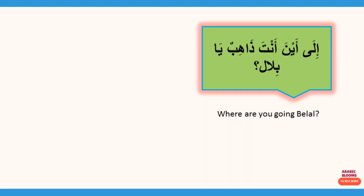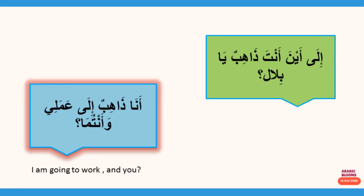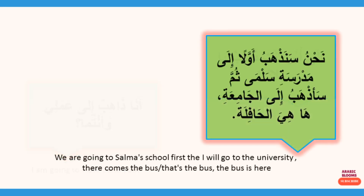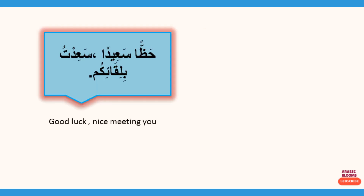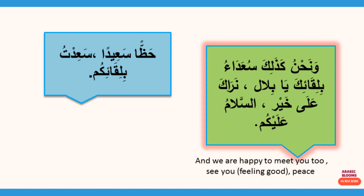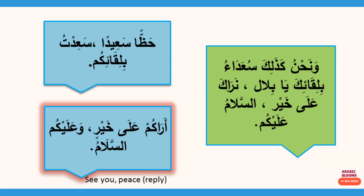إلى أين أنت ذاهب يا بلال؟ أنا ذاهب إلى عملي. وأنتما؟ نحن سنذهب أولا إلى مدرسة سلماء. ثم سأذهب إلى الجامعة. ها هي الحافلة. حظا سعيدا. سعدت بلقائكم. ونحن كذلك سعداء بلقائك يا بلال. نراك على خير. السلام عليكم. أراكم على خير. وعليكم السلام.